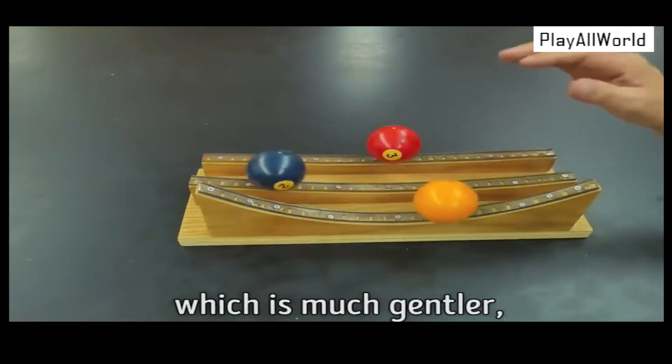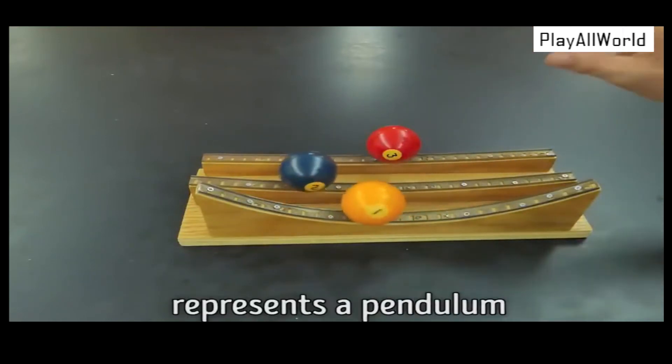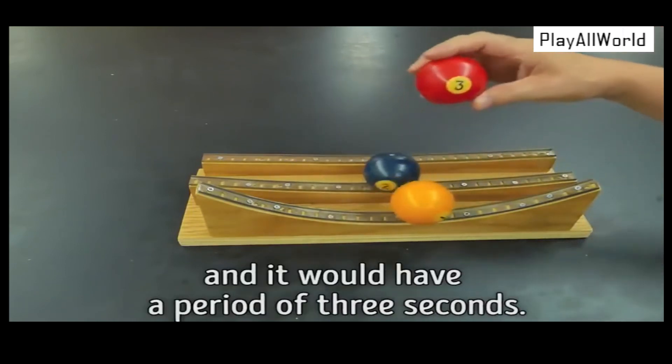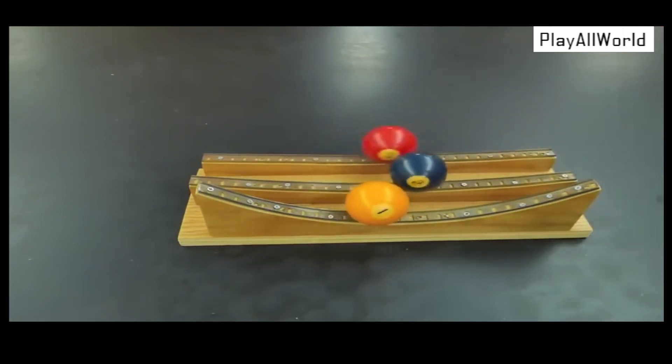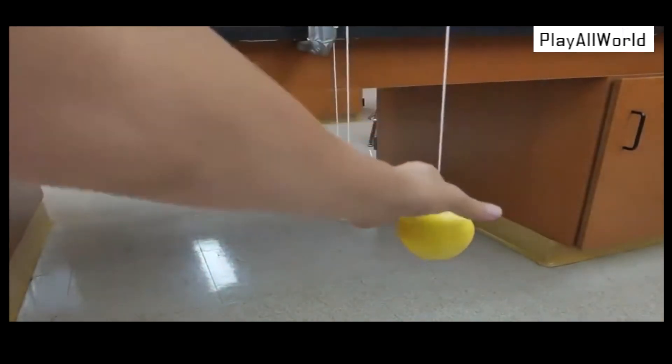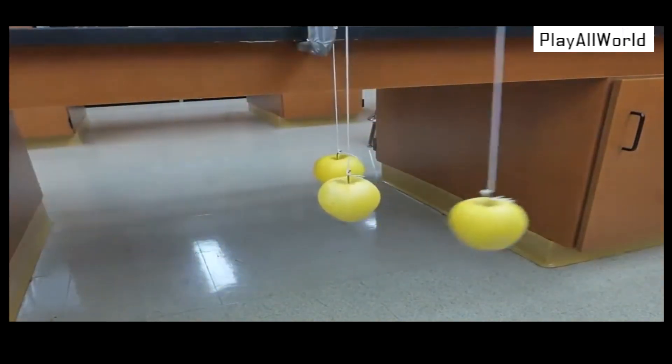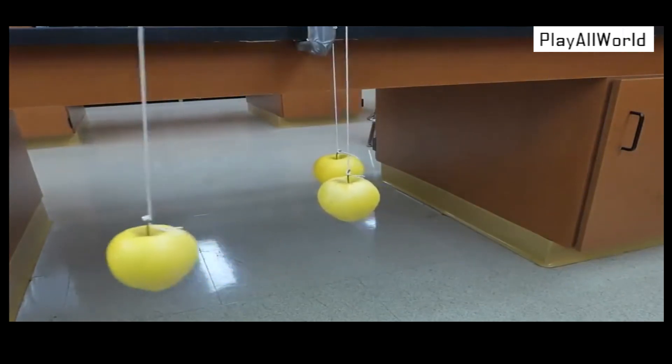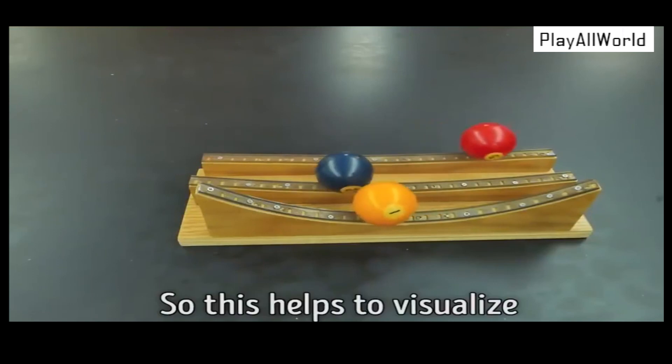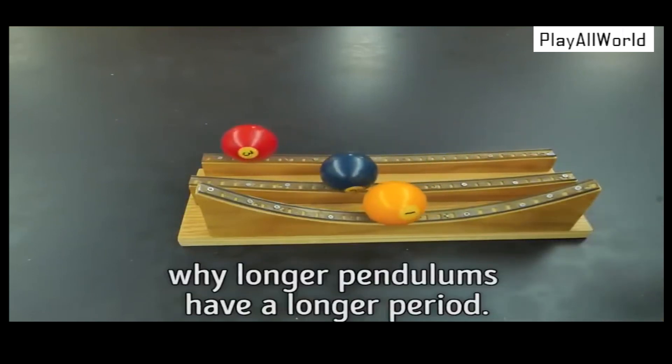And the third track back here, which is much gentler, represents a pendulum that is 222 centimeters long, and it would have a period of three seconds. So this helps to visualize why longer pendulums have a longer period.